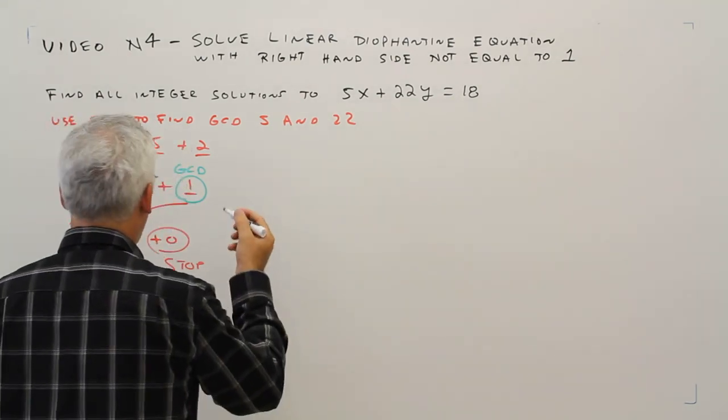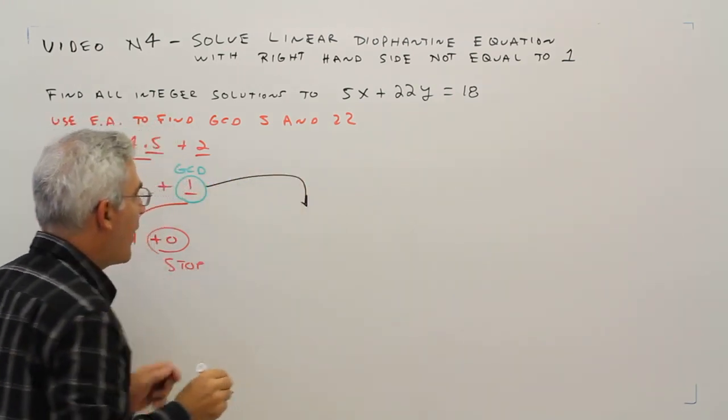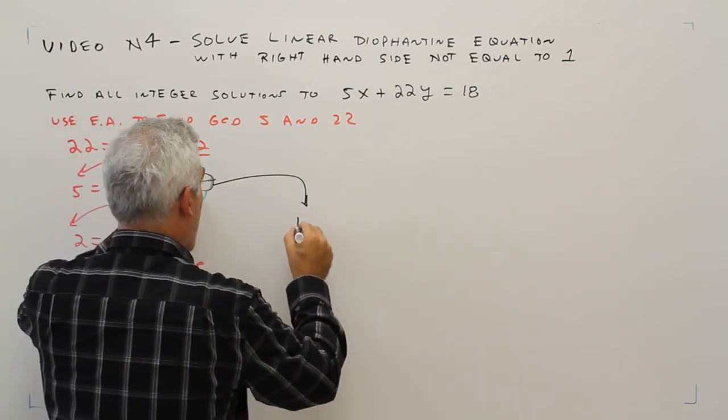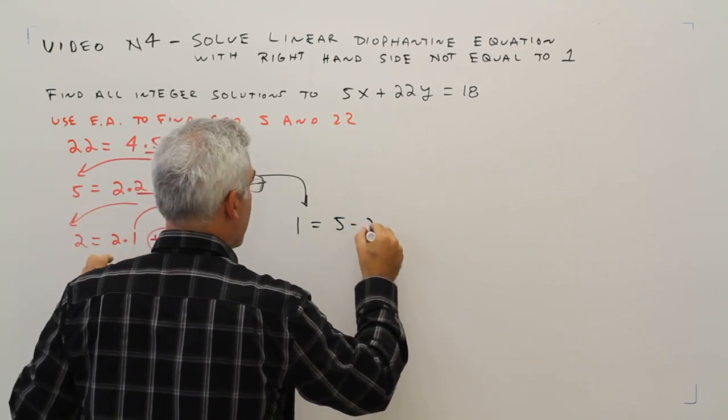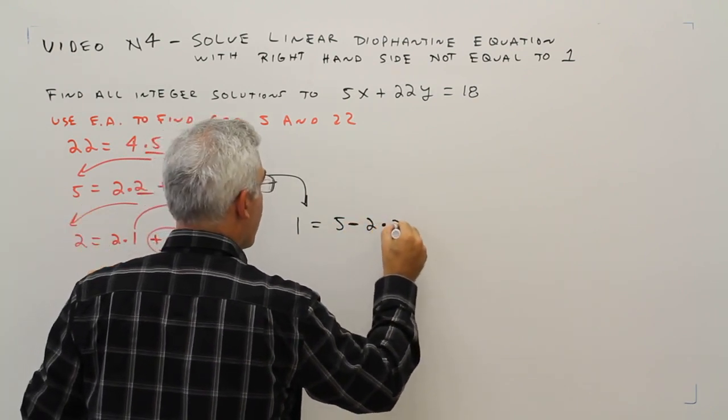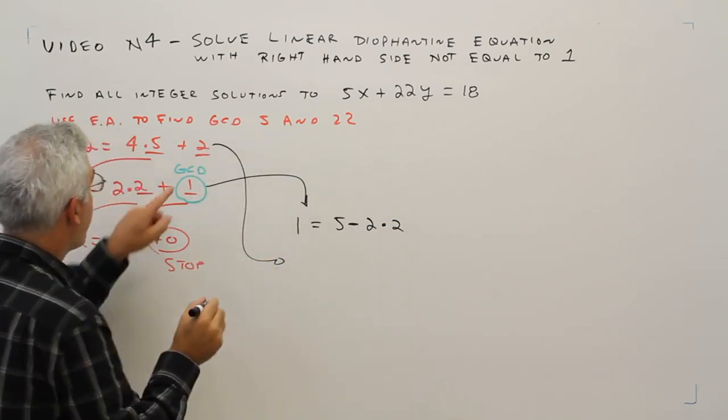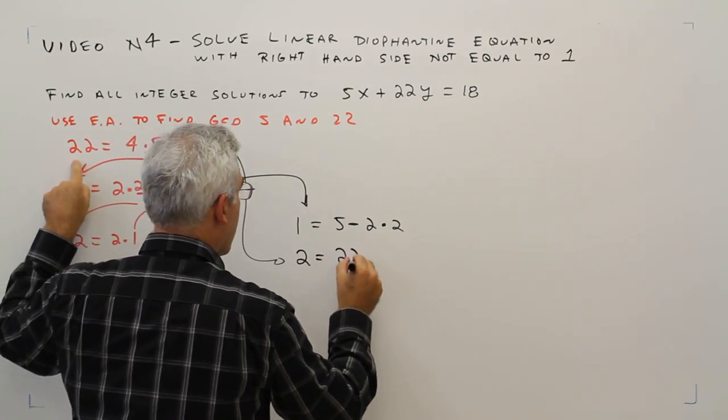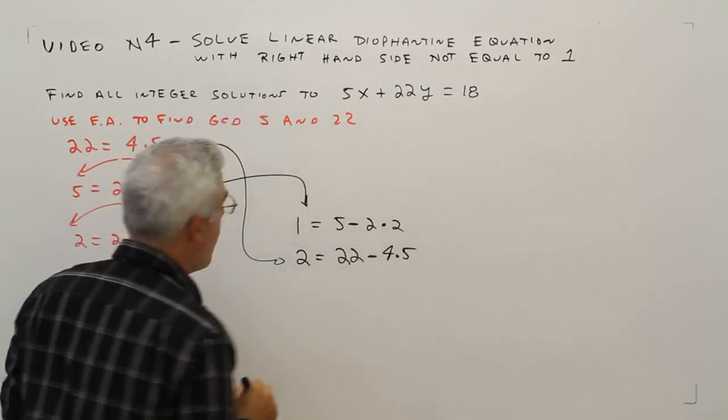So I'll do that right here. I'm solving for the right-hand side. So I'm going to get 1 equals 5 minus 2 times 2. Use the step above. 2 equals 22 minus 4 times 5.